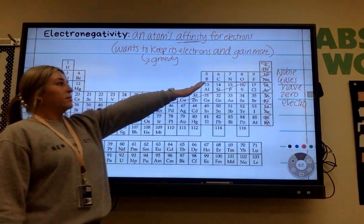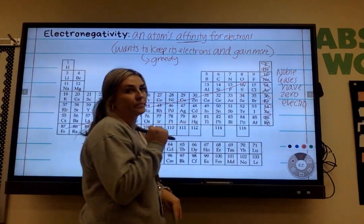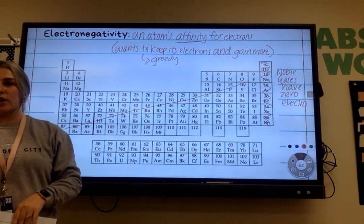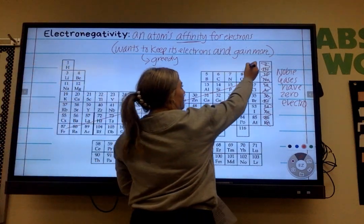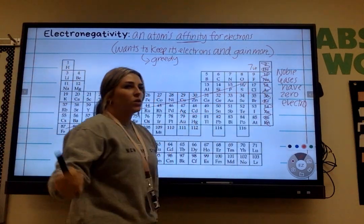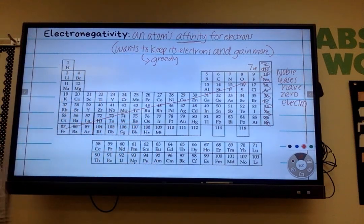So fluorine is in group what? How many valence electrons does fluorine have? Seven. It only needs one more to fulfill that octet rule, to have eight and to be stable. So it is really greedy. It wants to keep all seven of those and it really wants that last one. So it is very, very, very electronegative. Does that make sense?